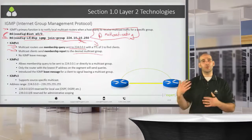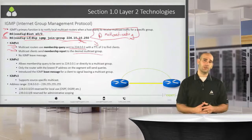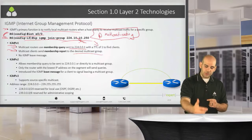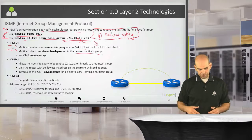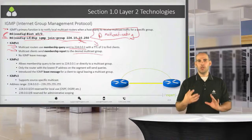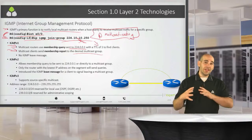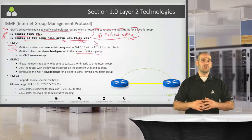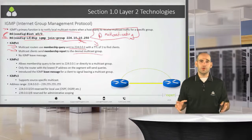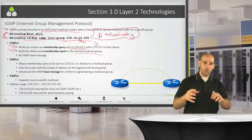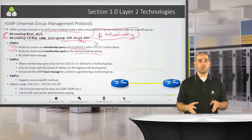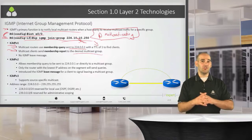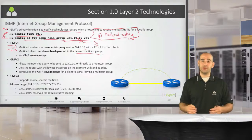We had two problems with IGMP version 1. First, all multicast routers were sending the membership query with no control over it. If I had 20 routers, all 20 were flooding my network with membership queries at timed intervals — not really productive. The other problem was that we had no leave message. So when a client wanted to stop receiving traffic from a particular group, there was no way to explicitly signal that.